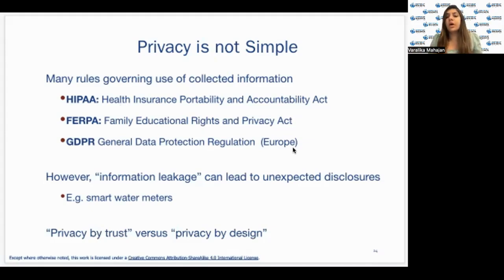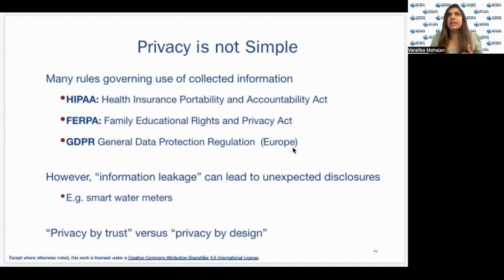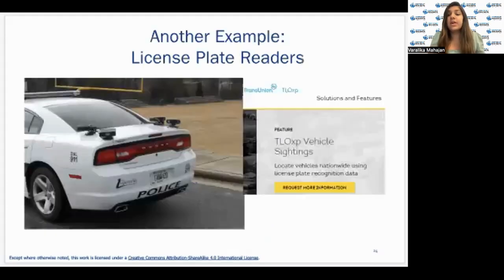Now let's take the example of smart water meters. We think that these are just water meters — how can they be a privacy breach? Well, they can be. These smart readers can help one determine how many people are at home and at what times. They can determine sleeping patterns, eating routines, what appliances are being used at what time — washer, dryer, and more. They can also help determine when the home is vacant. So being able to infer from a set of data is also a potential risk. Privacy is actually a complex phenomenon.